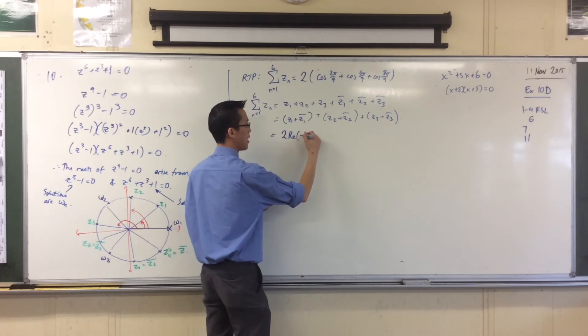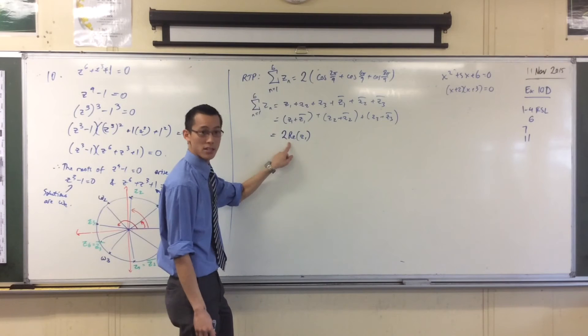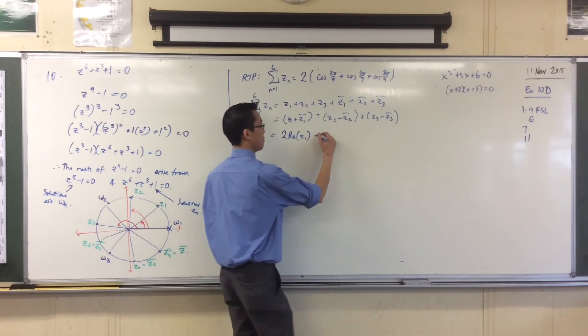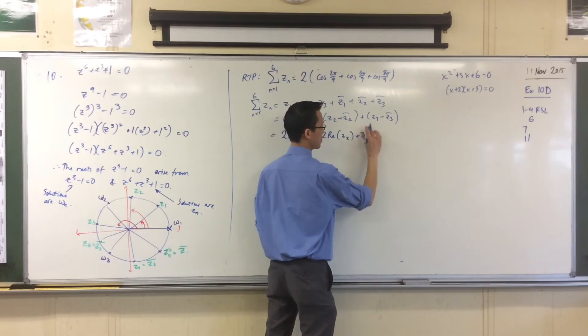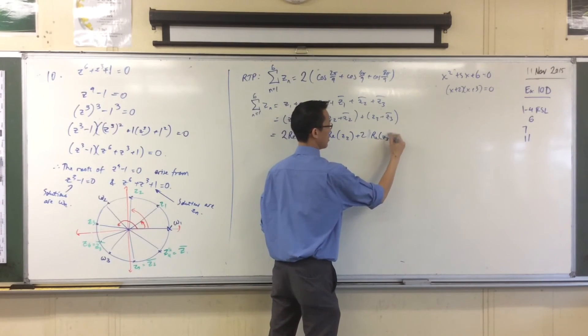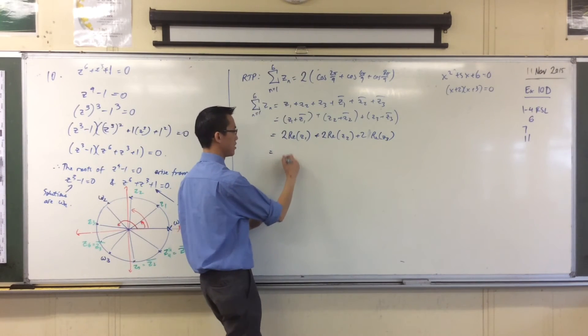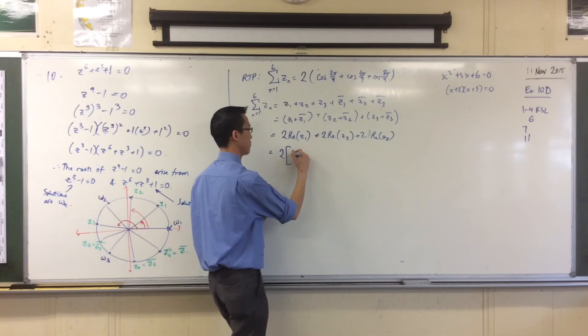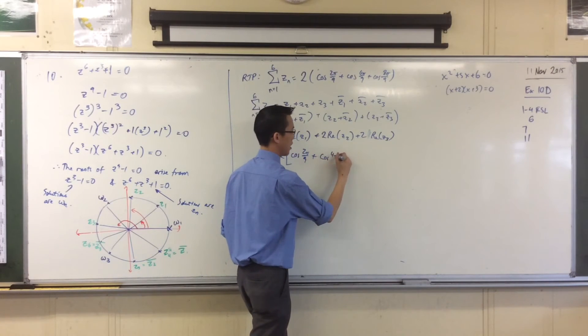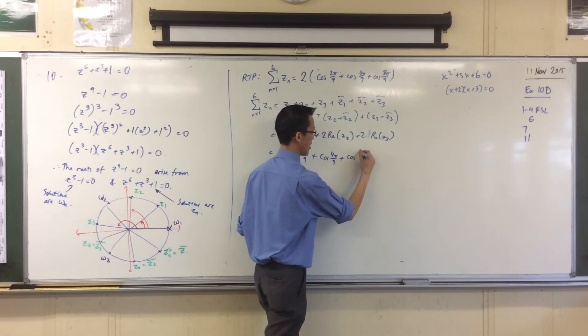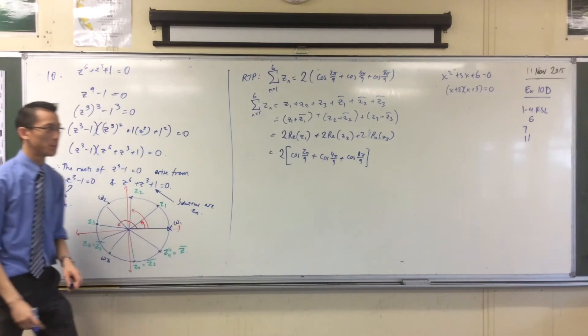Two times the real part of Z1. You see that? Like, if I pair them up, I think that makes that, that justifies this next step. Plus two times the real part of Z2 plus two times the real part of Z3. And then I'm pretty much there. So this is two outside of, first one is 2π on 9, second one is 4π on 9, and the last one is 8π on 9.